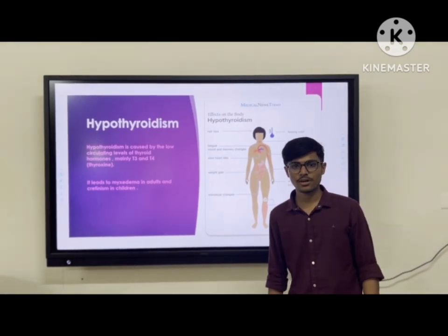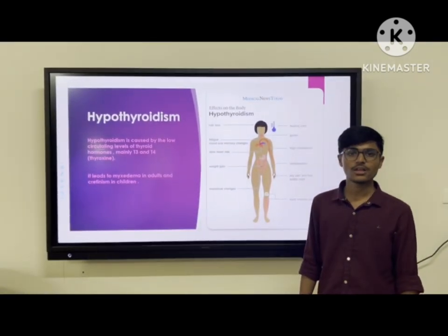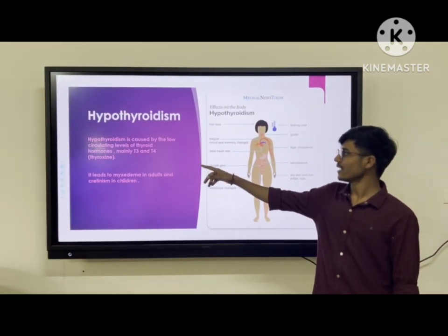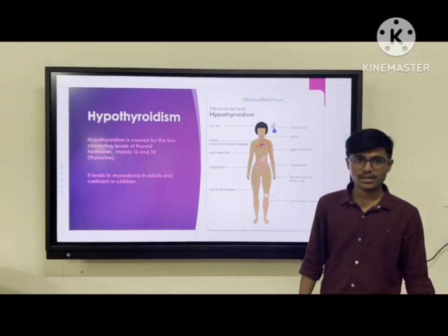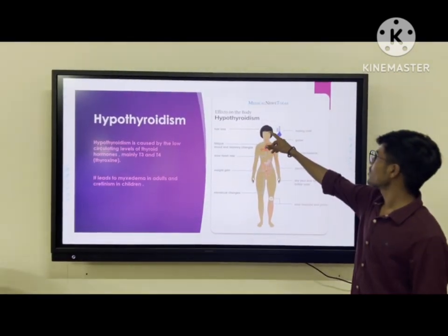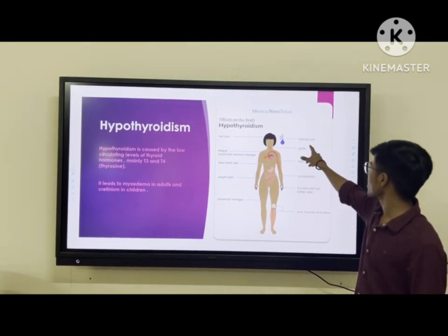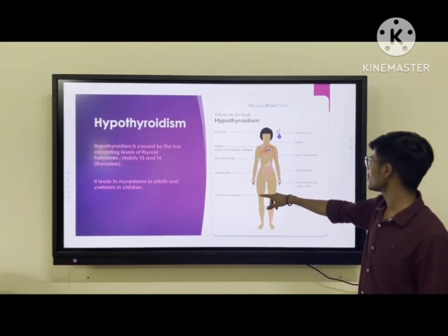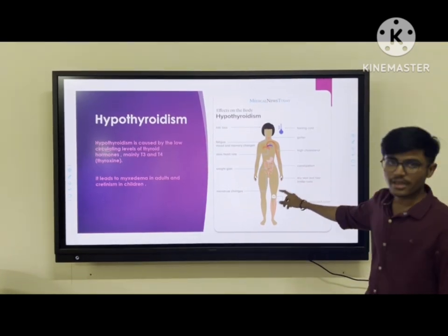Let's first talk about hypothyroidism. Hypothyroidism is caused by the low circulating level of thyroid hormones, mainly T3 and T4. It leads to myxedema in adults and cretinism in children. Effects on the body due to hypothyroidism include hair loss, feeling cold, goiter, slow heart rate, weight gain, menstrual changes, constipation, and more.